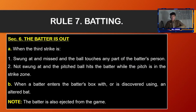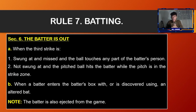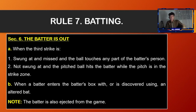Section number six, the batter is out: first, when the third strike is swung at and missed and the ball touches any part of the batter's person; second, when a pitch is swung at and hits the batter while the pitch is in the strike zone. Letter B: when a batter enters the batter's box and is discovered using an altered bat, and the batter is also ejected from the game.